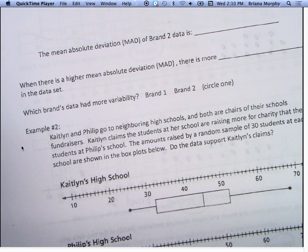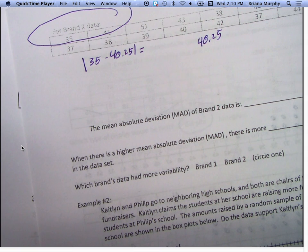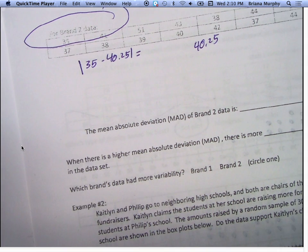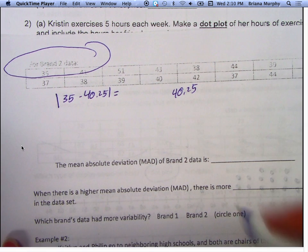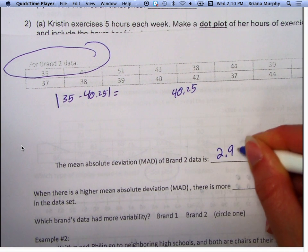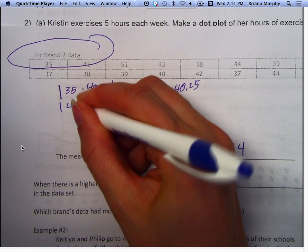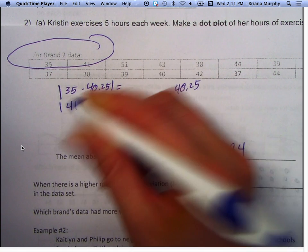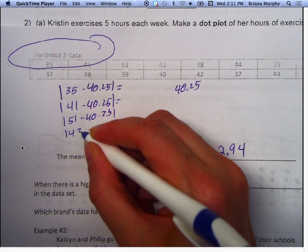We're reviewing stuff from 11.1 and 11.2. Did you guys finish the mean absolute deviation, the MAD of Brand 2 data? What did we get? 2.94. So the mean absolute deviation is where you say the absolute value of 35 minus 40.25, 41 minus 40.25, 51 minus 40.25, 43 minus 40.25.